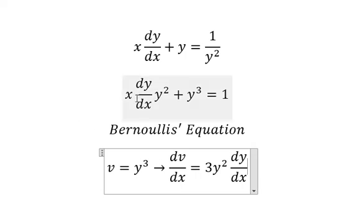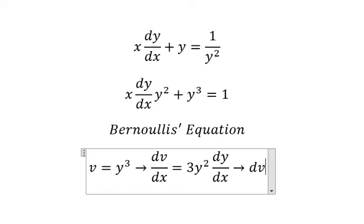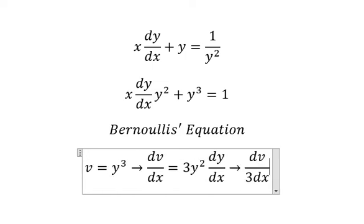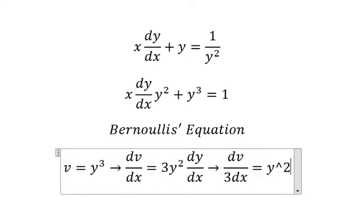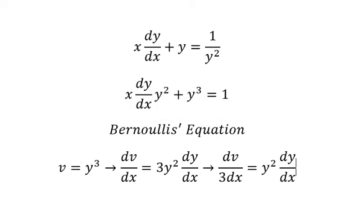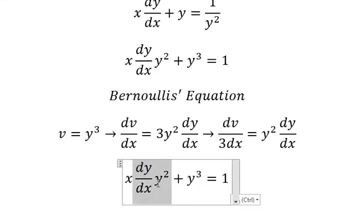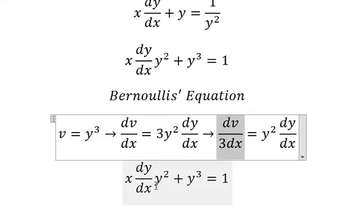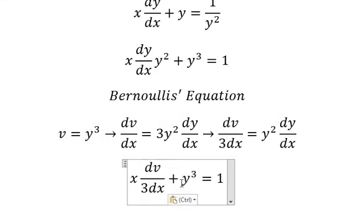Because we don't have number 3 here, we divide both sides by number 3. We change this one by this one. Y to the power of 3, we change for v.